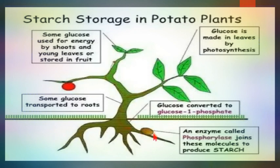So glucose is stored in the form of starch in potato tubers and other storage organs, or stored in the form of sucrose in sugarcane and beetroot.